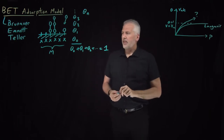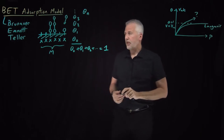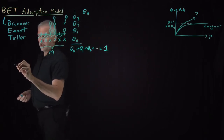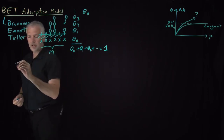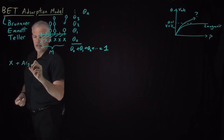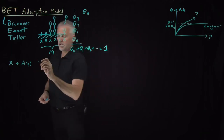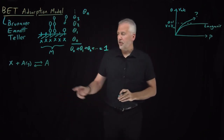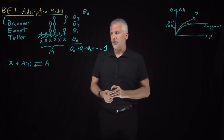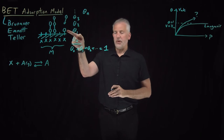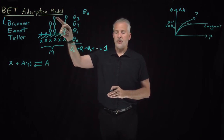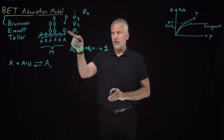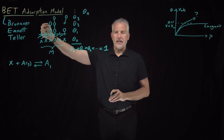We'll proceed the same way as for the Langmuir model — modeling adsorption and desorption using kinetics. For a molecule in the gas phase encountering an empty site, the system can form an adsorbed molecule A sub 1, a molecule adsorbed in the first layer. A molecule adsorbed in the second layer is A sub 2. Each reaction has a forward and backward direction with its own rate constant.